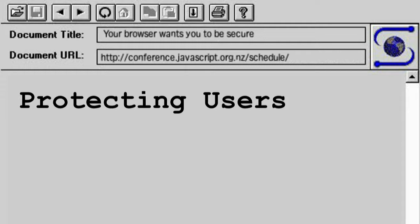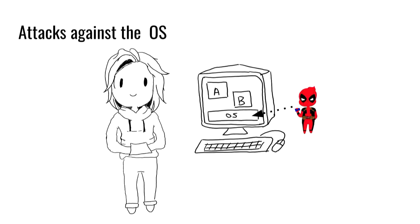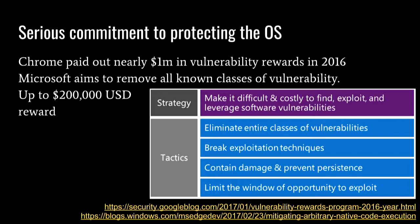So, protecting users. The biggest attack risk against users today is attacking the operating system underneath the browser. That's what the bad guys are trying to do — get malware installed, drive-by when you browse a website, view some advertisements, they install some crap on your computer, and then profit. The browser manufacturers have a serious commitment to protecting the operating system from the browser. Chrome's paid out a million dollars in vulnerability rewards last year. Microsoft's top reward is $200,000 US. Microsoft's strategy is basically to make it really difficult to exploit things and eliminate entire classes of vulnerabilities.